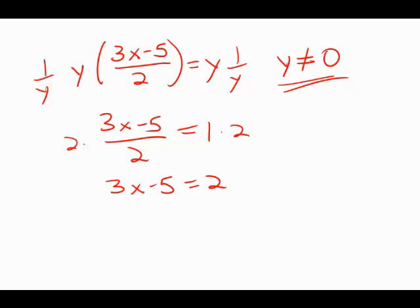Now, it's going to be very easy to isolate x. I'm just going to add 5 to both sides. 3x equals 7. Then divide by 3. x equals 7 over 3.